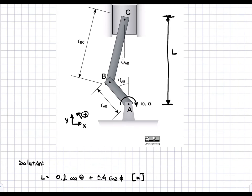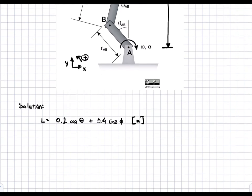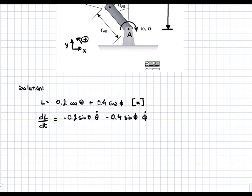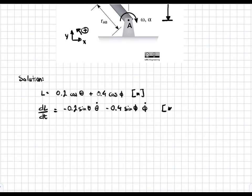I essentially just took the cosine component of each arm length to give us the full vertical height. Now I can take the first derivative with respect to time, knowing that theta and phi change with time because everything is rotating. So dL/dt is going to be equal to −0.2 sin(θ)·θ̇ − 0.4 sin(φ)·φ̇, using the chain rule. This result is in meters per second, and it equals the velocity of point C.